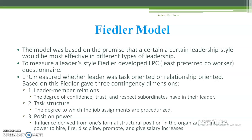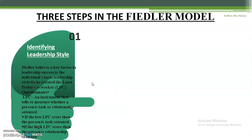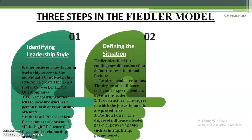The third dimension is position power — the influence derived from one's formal structural position in the organization, including the power to hire, fire, discipline, promote, and give salary increases. The three steps in this model are: first, identify leadership style using the LPC questionnaire, which tells whether a person is task-oriented (low LPC score) or relationship-oriented (high LPC score). Second, define the situation using the three contingency dimensions: leader-member relations, task structure, and position power.